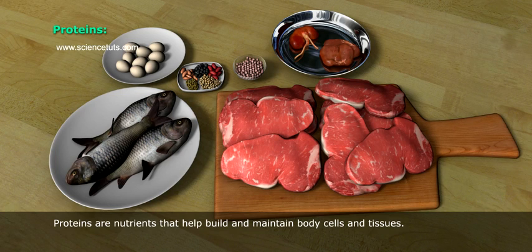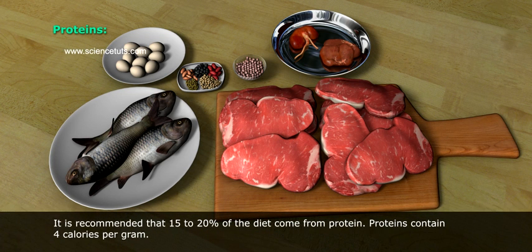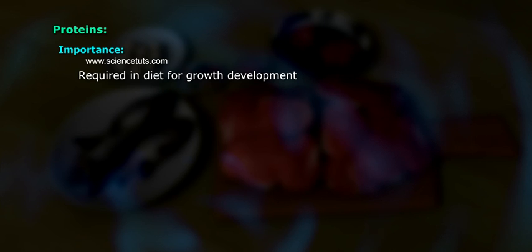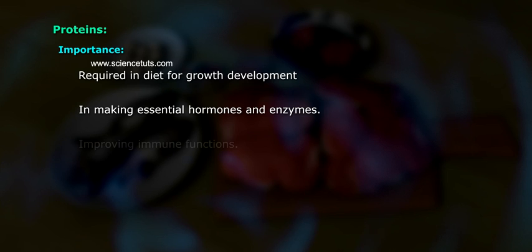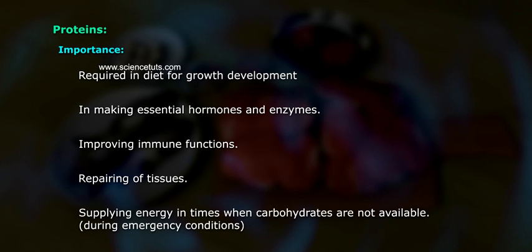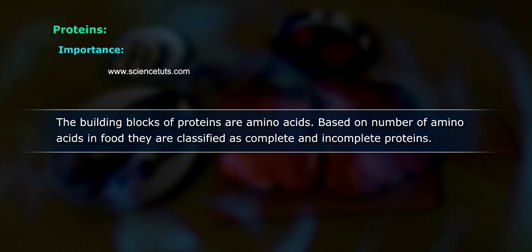2. Proteins. Proteins are nutrients that help build and maintain body cells and tissues. It is recommended that 15–20% of the diet come from protein. Proteins contain 4 calories per gram and are made up of carbon, oxygen, hydrogen, and nitrogen. Importance: required for growth and development, making essential hormones and enzymes, improving immune function, repairing tissues, and supplying energy when carbohydrates are not available. The building blocks of proteins are amino acids. Based on the number of amino acids, proteins are classified as complete and incomplete.